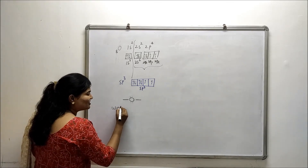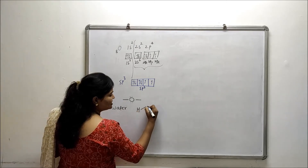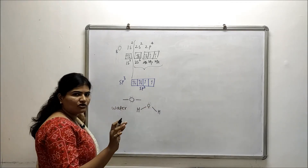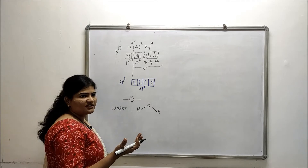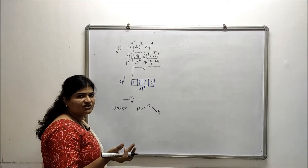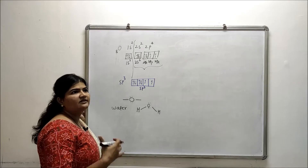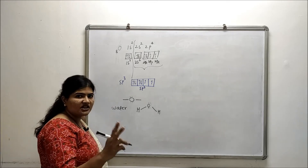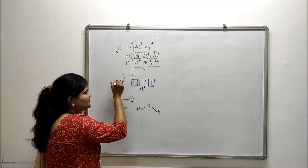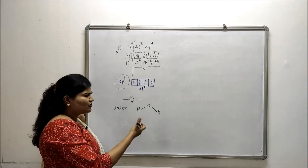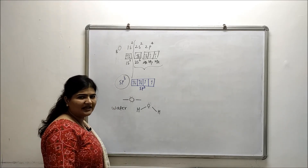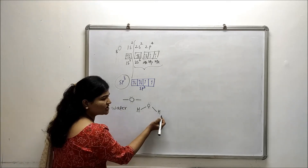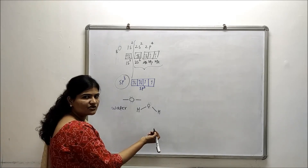Let's discuss a molecule in which oxygen is in its sp3 hybridized state — the water molecule, H2O. Not only water, but even in ethers and alcohols, oxygen is in its sp3 hybridized state. Whenever oxygen forms two bonds with two other atoms, it is in the sp3 hybridized state. In water, oxygen is forming two bonds with two hydrogen atoms.